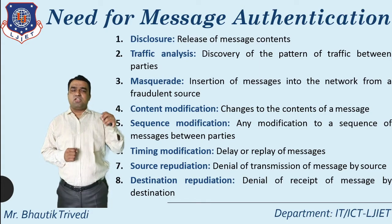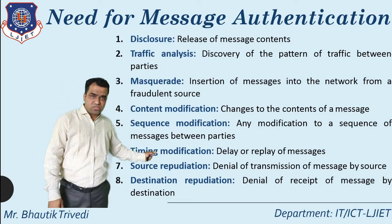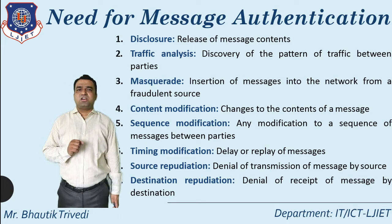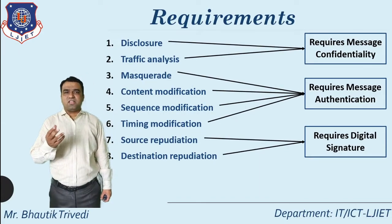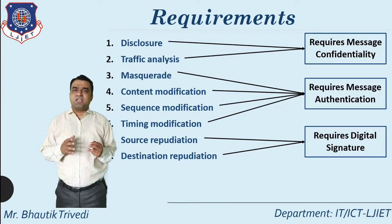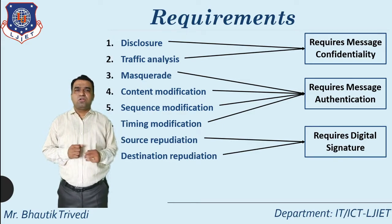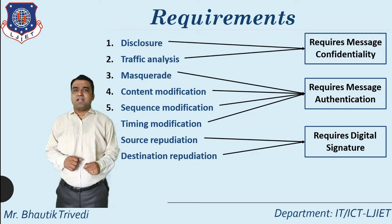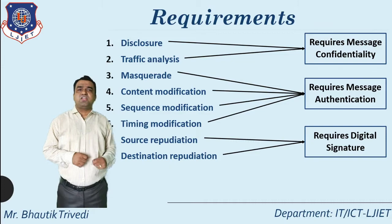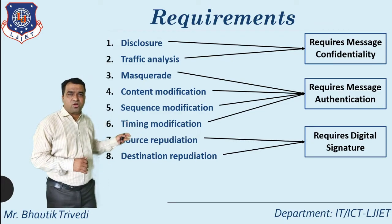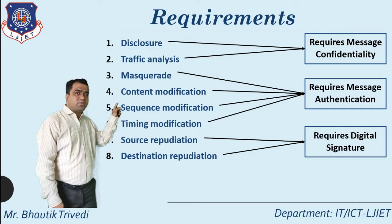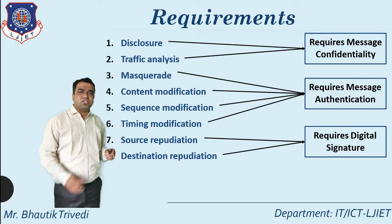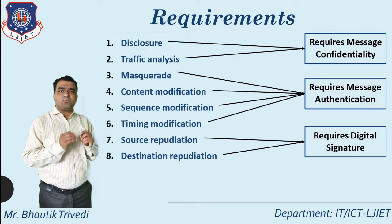Needs seven and eight are source repudiation and destination repudiation — denying the transmission of a message by the source and denying the receipt of a message by the destination. Disclosure and traffic analysis fall under message confidentiality; masquerade, content modification, and sequence modification fall under message authentication; and source and destination repudiation fall under digital signature.